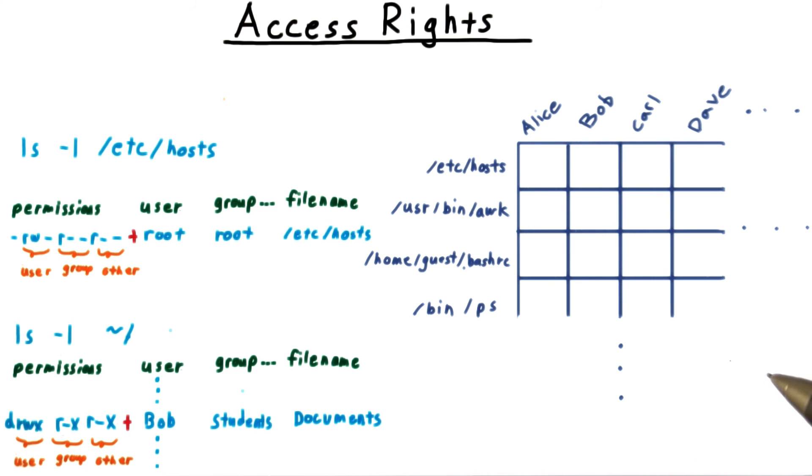For cases where more detailed permissions are needed, access control lists are sometimes used on various operating systems. These make it possible to create arbitrary row values in our permissions matrix by granting permissions to individual users or other groups defined in the file system. I encourage you to explore some more on your own. Some good places to start are provided in the instructor notes.